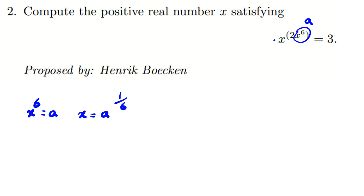We know x is positive, so a is positive. If I replace x with a to the 1/6 in the original equation, the exponent becomes 2a, giving us a to the 2a/6 equals 3. Simplifying, 2a over 6 equals a over 3, so we get a to the a/3 equals 3.